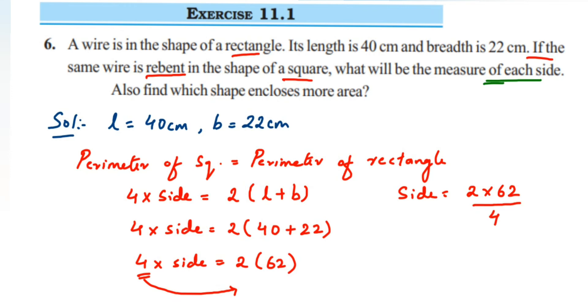From here we can say side is equal to 2 × 62 ÷ 4. We can cancel the numbers: 2 goes up, 2s go up to 4, and we can cancel 62 and 2.